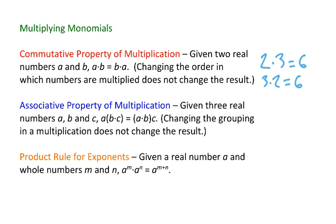An illustration of that might be something like this. Suppose you're looking at two times three times four. Order of operations says work within parentheses first. So the first thing you would do is multiply the three and the four, and that would give you twelve. Two times twelve is twenty-four.